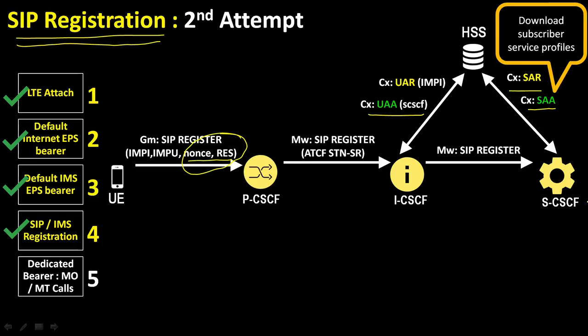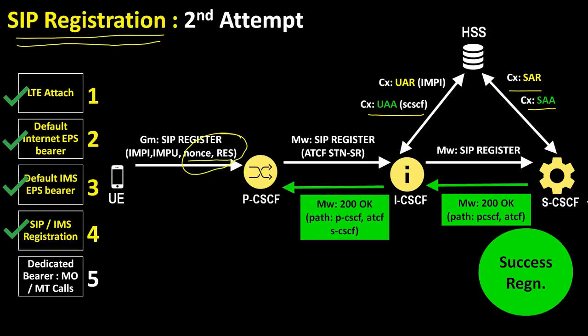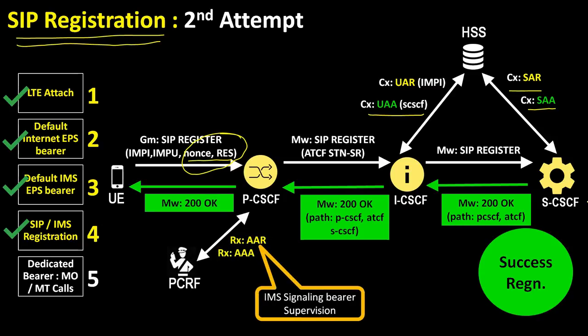The S-CSCF checks whether the RES received in the SIP REGISTER matches the XRES previously stored. The S-CSCF then performs a Server Assignment Request (SAR) procedure to the HSS to download the relevant user profile and register the VoLTE UE. The S-CSCF stores the route header of the P-CSCF and binds it to the contact address of the VoLTE UE for routing future messages. Registration is now complete; the S-CSCF sends a 200 OK to the I-CSCF, which forwards it to the P-CSCF. The P-CSCF establishes a new set of security associations and sends the 200 OK to the VoLTE UE.